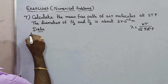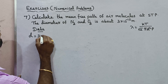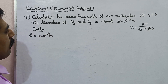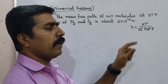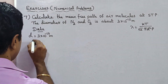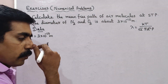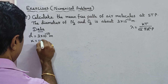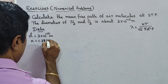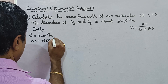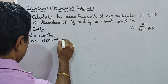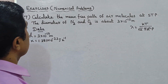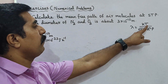Here D is the diameter, and K is the Boltzmann constant. The value of K is 1.381 × 10⁻²³ J·K⁻¹. Next is temperature.